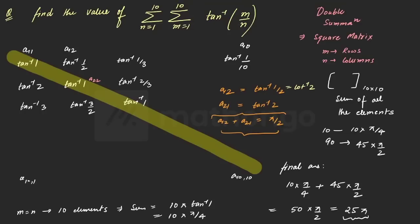Double summation, I again repeat, students, will always form a square matrix provided m and n are equal and this will help you solve these kind of questions, imagine these kind of questions in a better way.